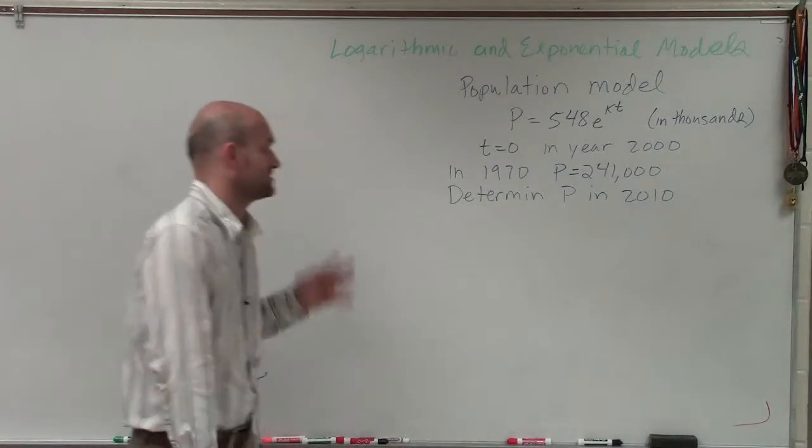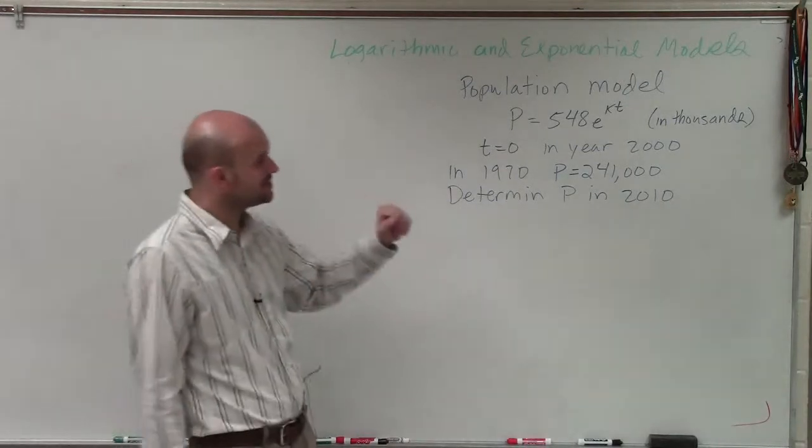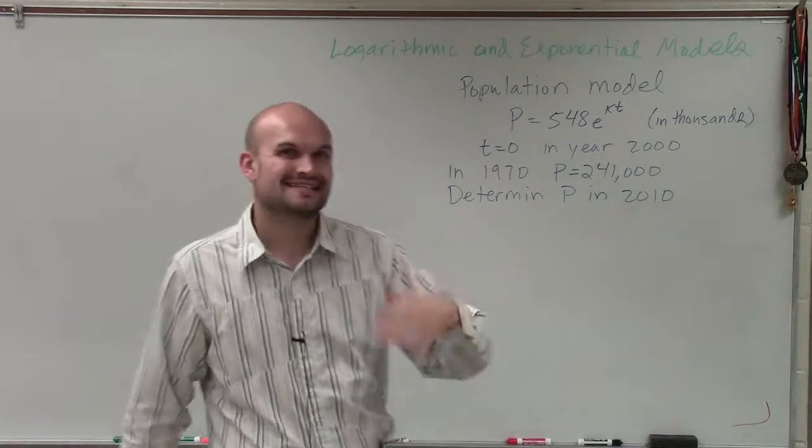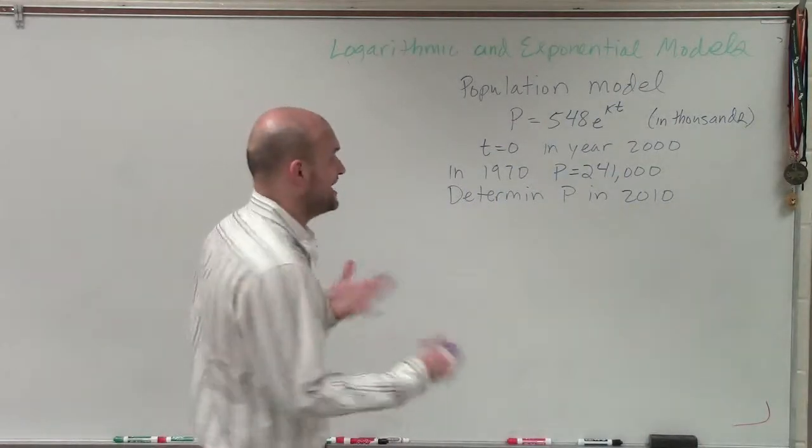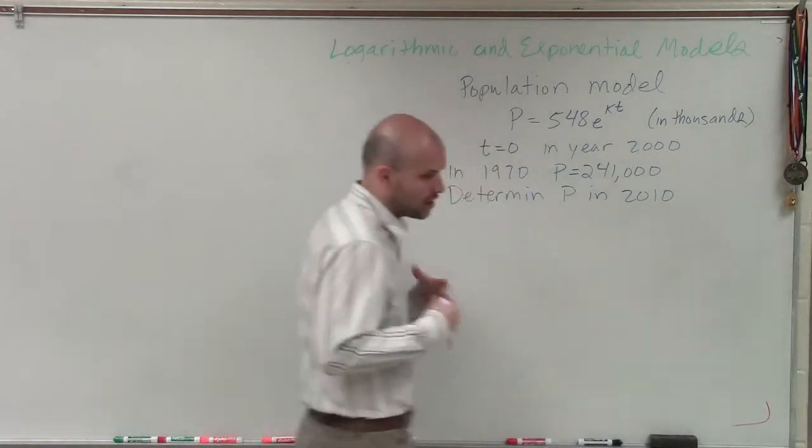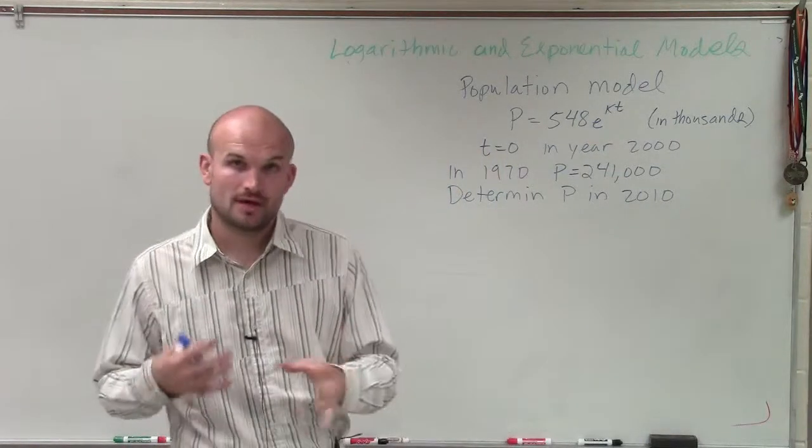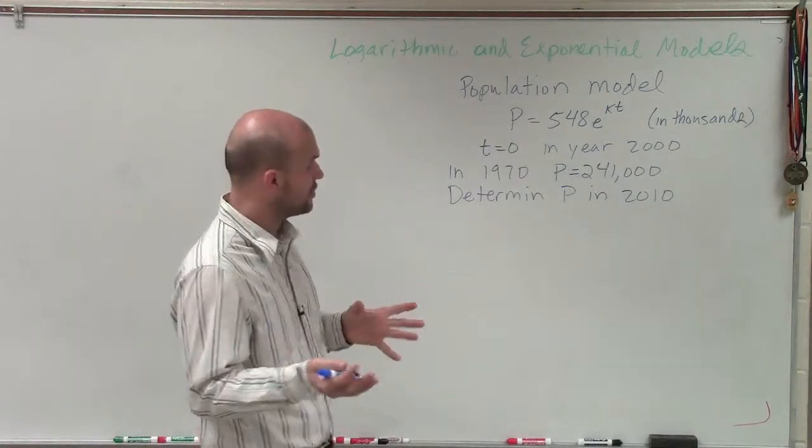Welcome. All right. So in this case, they give us a population model where the population is equal to 548 times e raised to the kt, where k is going to represent our growth rate.